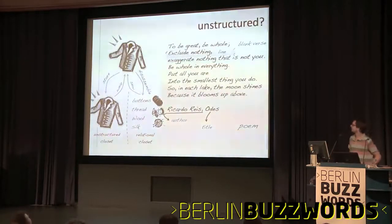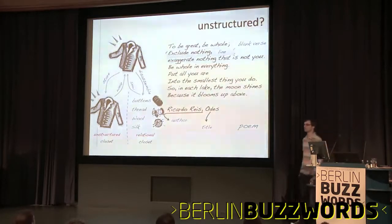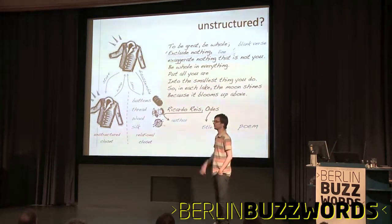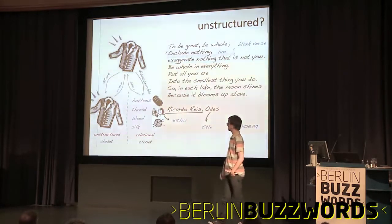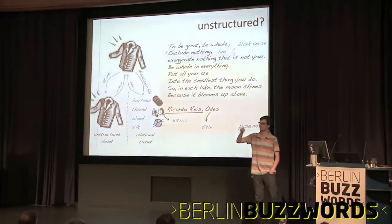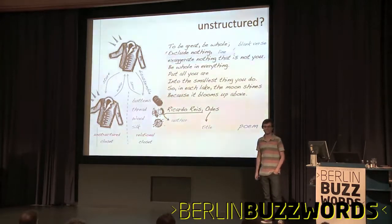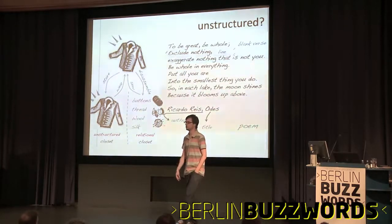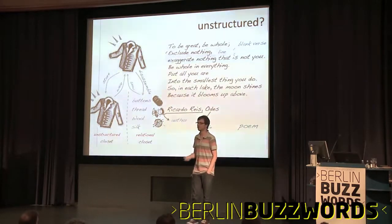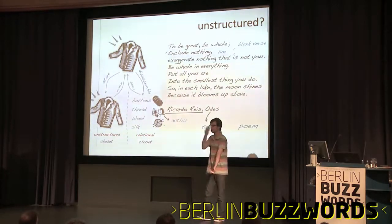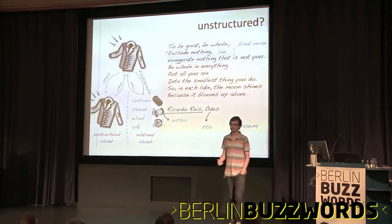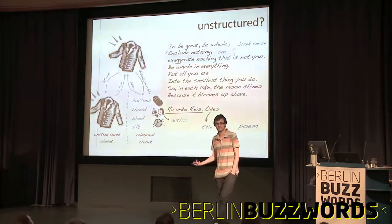I like to use this jacket analogy. In the relational world, every time you want to store your jacket, you take the buttons, the thread, the wool, the silk and put them into individual buckets — it's kind of like OCD. Then you reassemble it every single time. If you're doing something with documents, what you do is store the jacket. And that's the main thing if you want to scale something like documents.